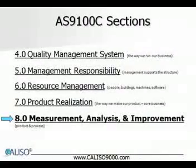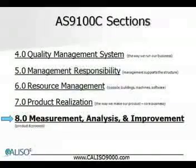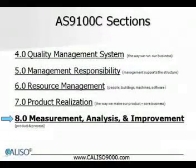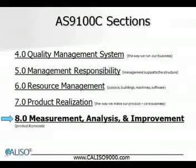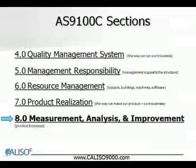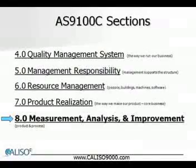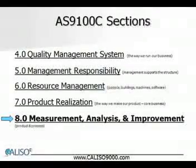Section 8 is titled Measurement, Analysis, and Improvement — and we're speaking of product and process. The most significant addition over ISO 9001 found in Section 8 of AS9100C is in Section 8.2.4, Monitoring and Measurement of Product. This requirement states that when sampling inspection is used as a means to accept product, the sampling plan needs to be justified on the basis of recognized statistical principles and appropriate for use.